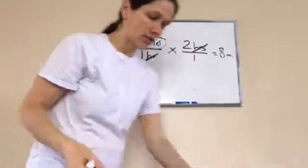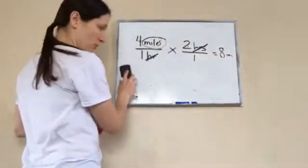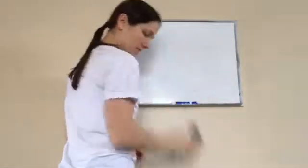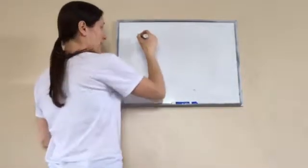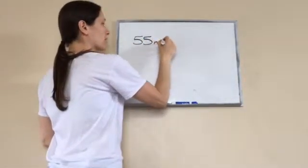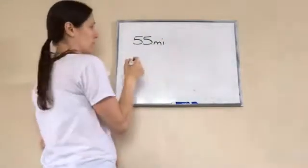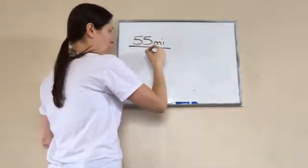All right. Let's try a few more. You'll get a hang of it. All right. Write this one down. Here's what it says. Multiply 55 miles. Now, I'm going to put MI for miles. Per hour.